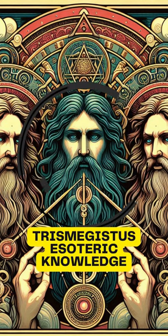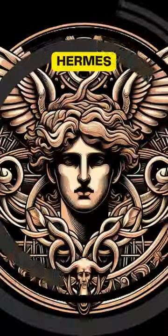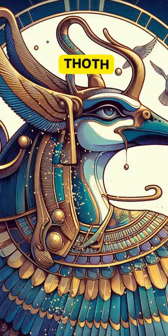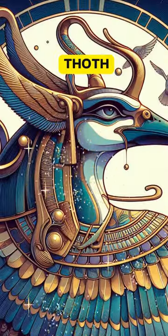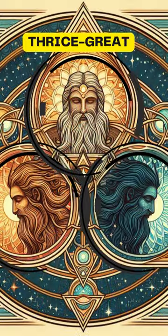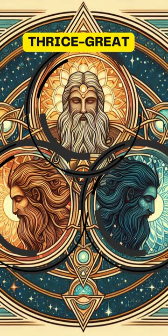Trismegistus is a mythical or legendary figure, often associated with Hermes in Greek mythology and Thoth in Egyptian mythology. The name Trismegistus means thrice great, emphasizing his immense wisdom.